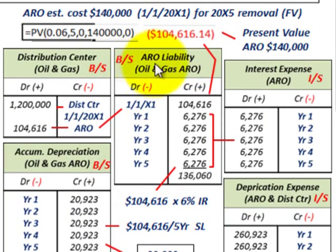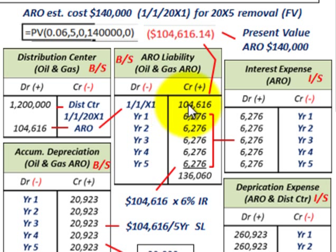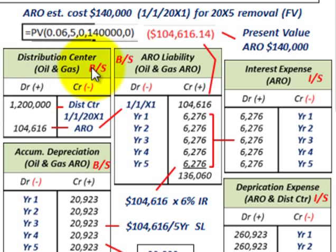Let's look at how we'd record this. For the ARO liability on our balance sheet, we credit it for the present value of $104,616 on 1/1/20X1. For the asset side, we debit our distribution center account for that same $104,616. We also purchased the distribution center for $1.2 million, so we capitalize that as well. The point is we want to include this ARO liability in the same account as our distribution center cost.